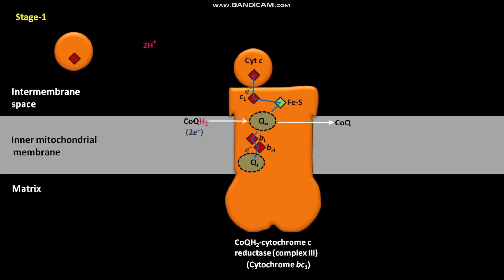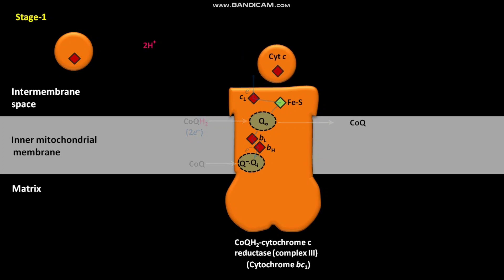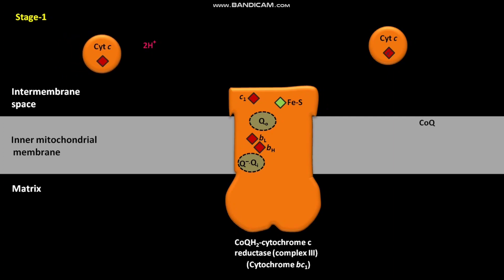A new oxidized COQ molecule binds to the QI site in complex III. In the QI site, one electron released from reduced COQH2 partially reduces the bound oxidized COQ molecule. As a result, a COQ semiquinone anion (Q•⁻) is formed at the QI site. Cytochrome C shuttles one electron from complex III to complex IV, and another cytochrome C then binds to complex III.